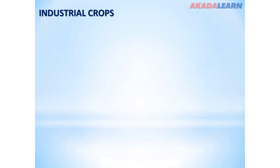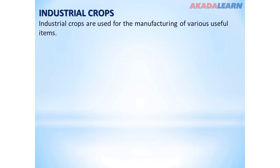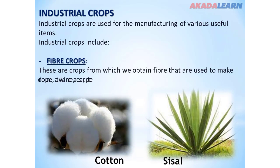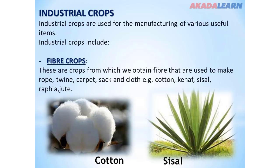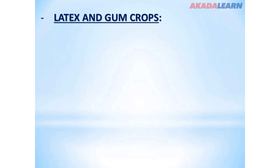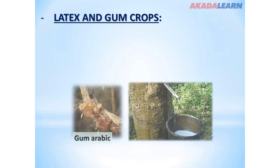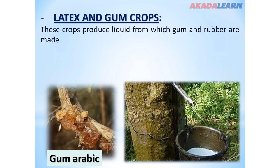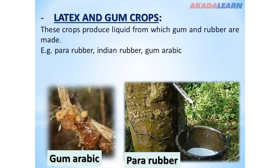Industrial crops are used for the manufacturing of various useful items. Industrial crops include fiber crops, as well as latex and gum crops. Latex and gum crops produce liquid from which gum and rubber are made. Examples include para rubber, India rubber, and gum arabic.